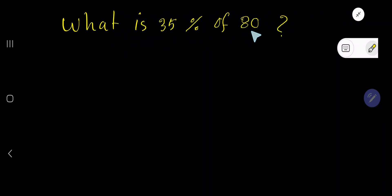What is 35% of 80? Just translate it. What means X, is means equal sign, then 35% of means multiplication sign, then 80. Just rewrite it: 35% means 35 over 100, then we have 80. Just cancel the zero to zero.